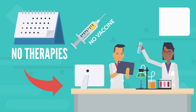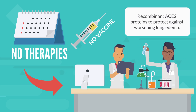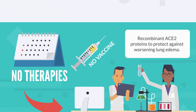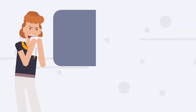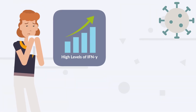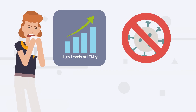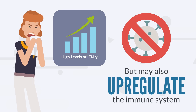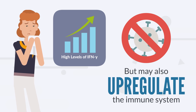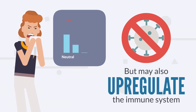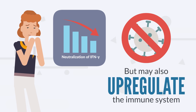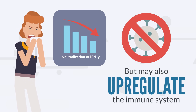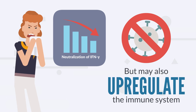Novel therapeutic targets are being tested, including recombinant ACE2 proteins to protect against worsening lung edema. Patients with COVID-19 also have high levels of interferon gamma, which inhibits viral replication but may also upregulate the immune system to an exuberant level, thereby causing more lung injury. Thus, neutralization of interferon gamma is a potential therapeutic target.